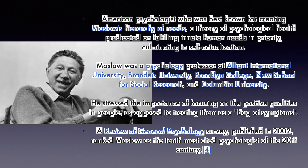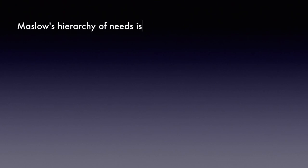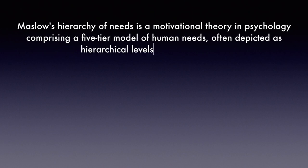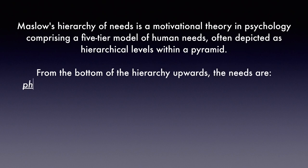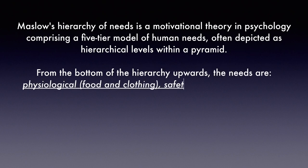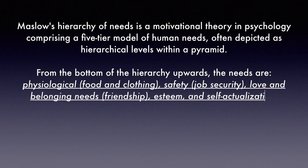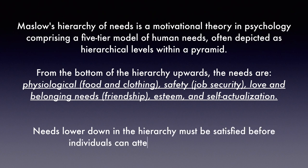A review of general psychology survey published in 2002 ranked Maslow as the 10th most cited psychologist of the 20th century. Maslow's Hierarchy of Needs is a motivational theory in psychology and it comprises a five-tier model of human needs depicted in a pyramid. From the bottom of the hierarchy upwards, the needs are physiological needs, safety needs, love and belongingness needs, esteem needs, and self-actualization needs. Needs lower down in the hierarchy must be satisfied before individuals can attend to needs higher up.